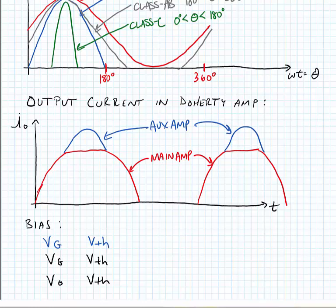You can see if we use a Class-C amplifier, we can choose the division such that the main amplifier conducts more of the current than the auxiliary amplifier does.